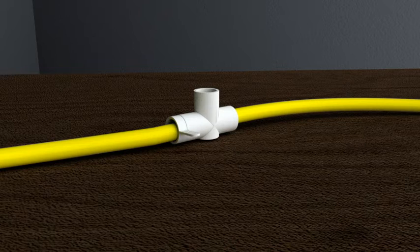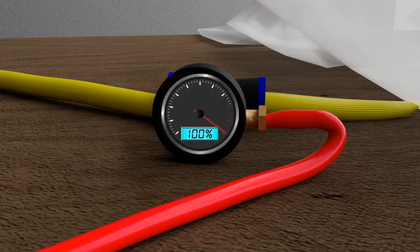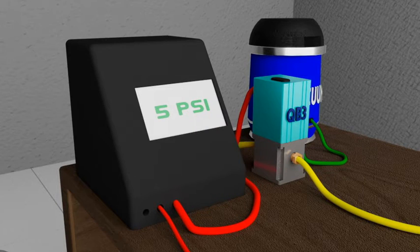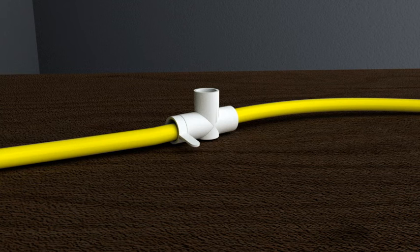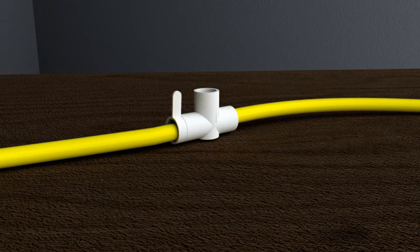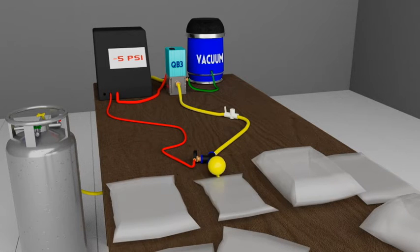Once isolated, pressure is monitored for a period of time to verify that no leaks exist. Once the test is complete, the QB3 is commanded to apply vacuum and the gas is voided.